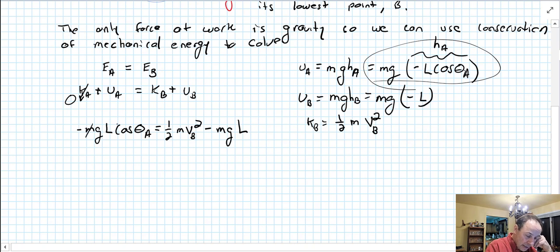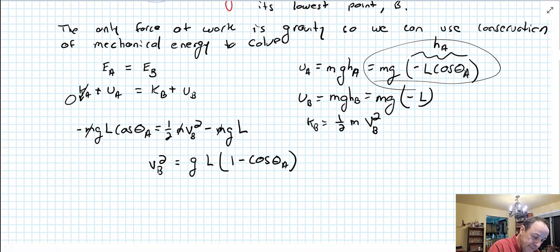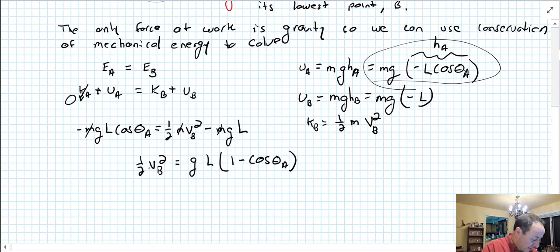Now we have mass in all of these, we can get rid of the mass. Let's rearrange so one half v_B squared, and we can factor out a g and an l, and it's going to be 1 minus cosine theta A. Multiply both sides by two. Get rid of that, it should just be one half. Multiply both sides by two.